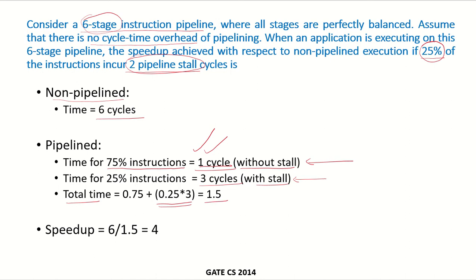What is the speedup, non-pipelined is 6, pipelined is 1.5, so 6 upon 1.5 which will be equal to 4. This is the speedup that will be achieved.